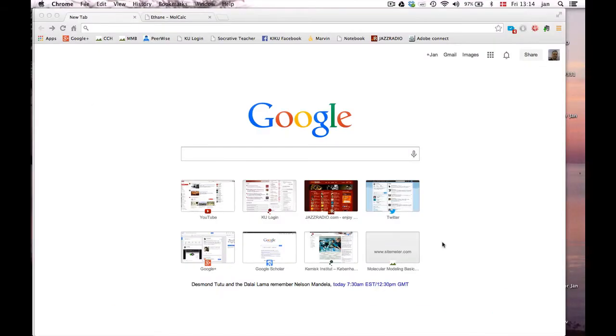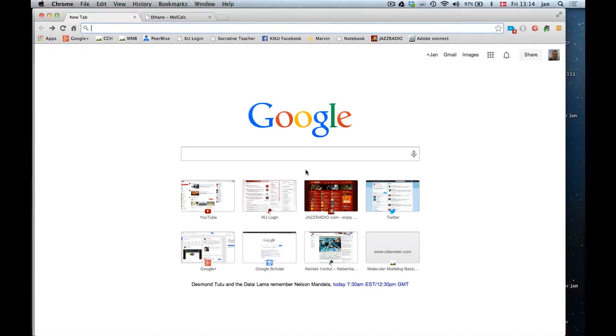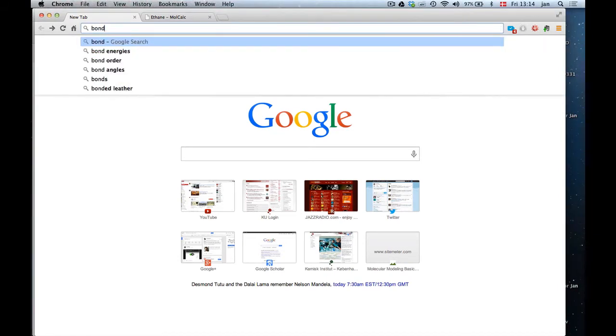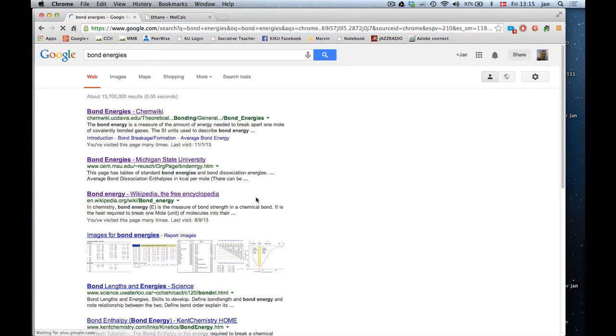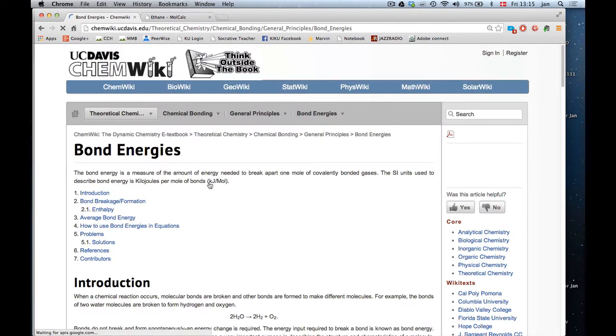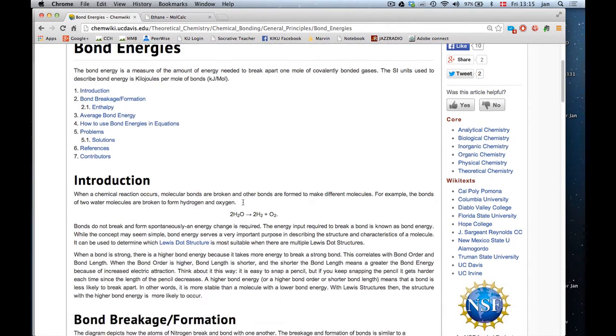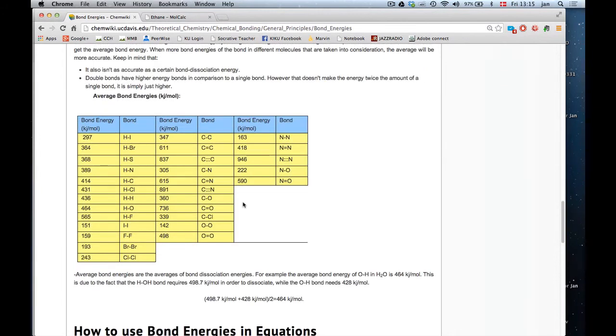So for example if I go to Google and type bond energies, I get for example here in the chem wiki, first a more thorough explanation of what they are,